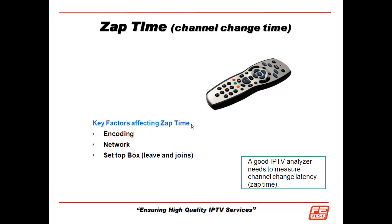We talked about the time to change channels. Typically a customer will allow up to half a second to change channels before they get frustrated. So we need to make sure that the set-top box combined with the DSLAM — that protocol exchange — is able to work and change channels for the customer within half a second or less.